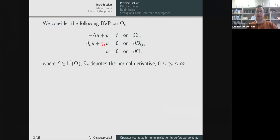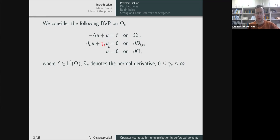The problem we consider is a boundary value problem for the Laplacian. Instead of the standard Poisson equation, I include an extra term plus u. This extra term plays no role in making the problem harder — it just guarantees the problem has a unique solution for any right-hand side. If omega is the whole space and gamma is zero (Neumann condition), then zero is in the spectrum of the Laplacian, so this term guarantees existence and uniqueness.